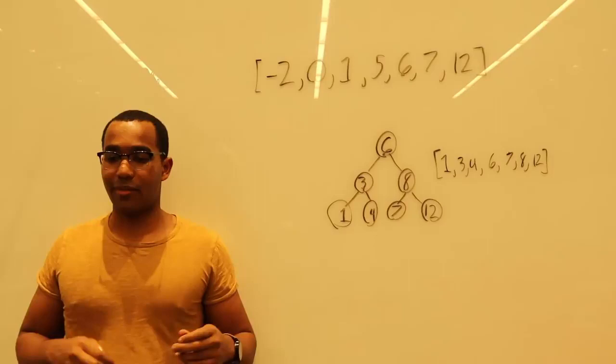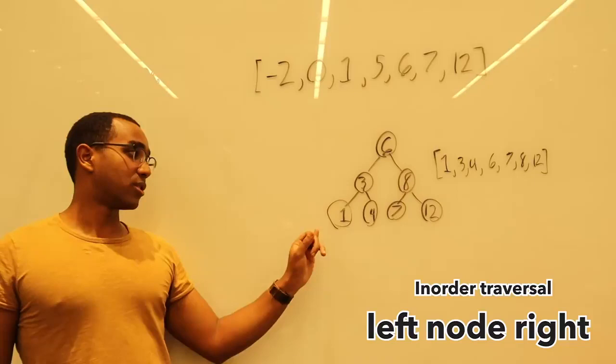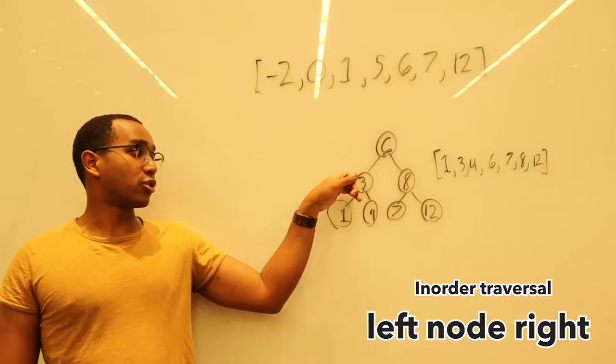And we would visit the, we would go left, left, visit the one node, visit the three, right, visit the four, backtrack, backtrack, node.